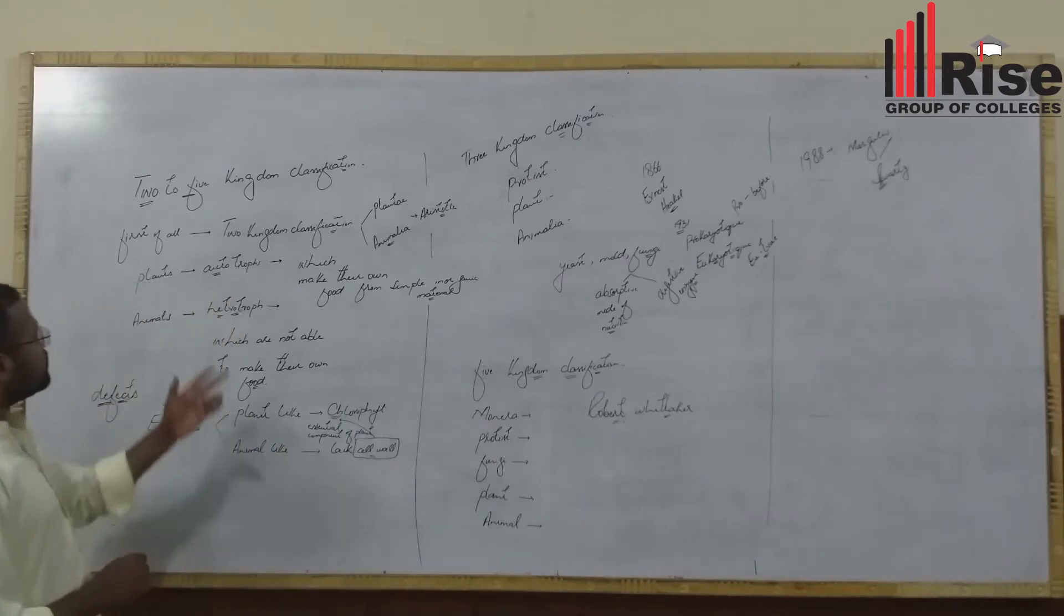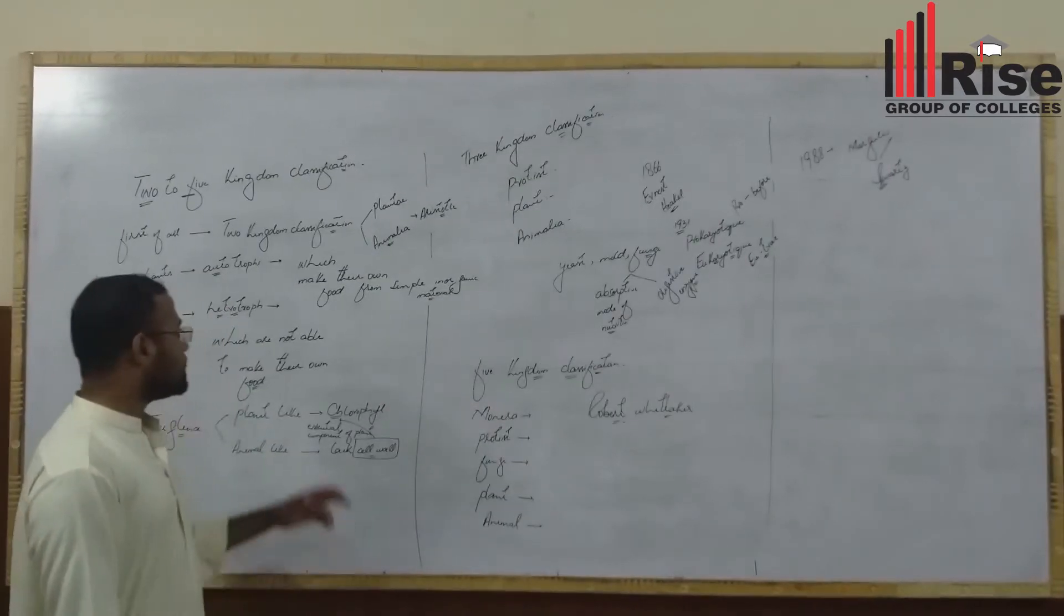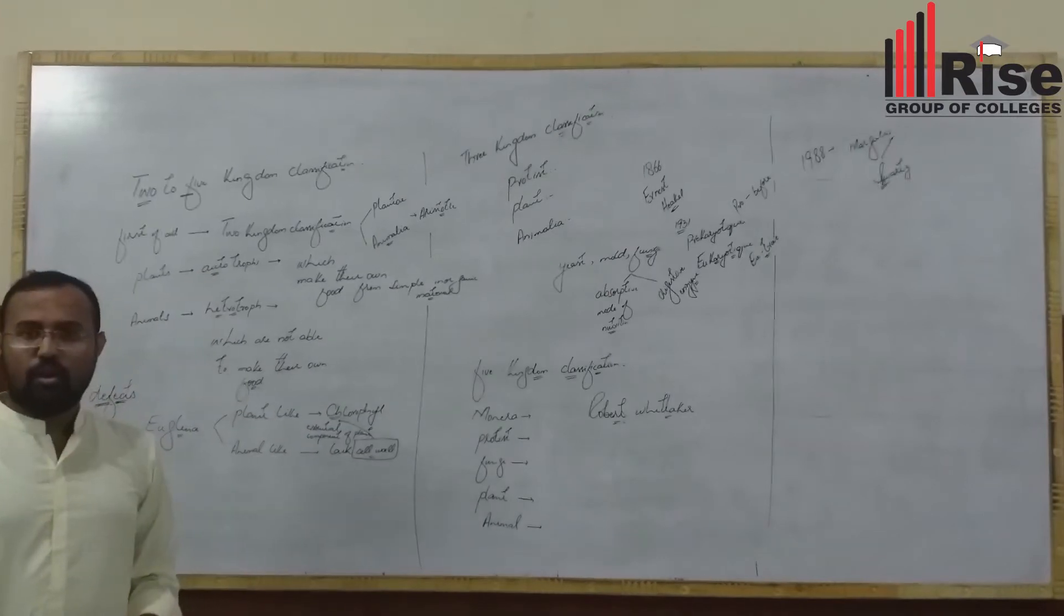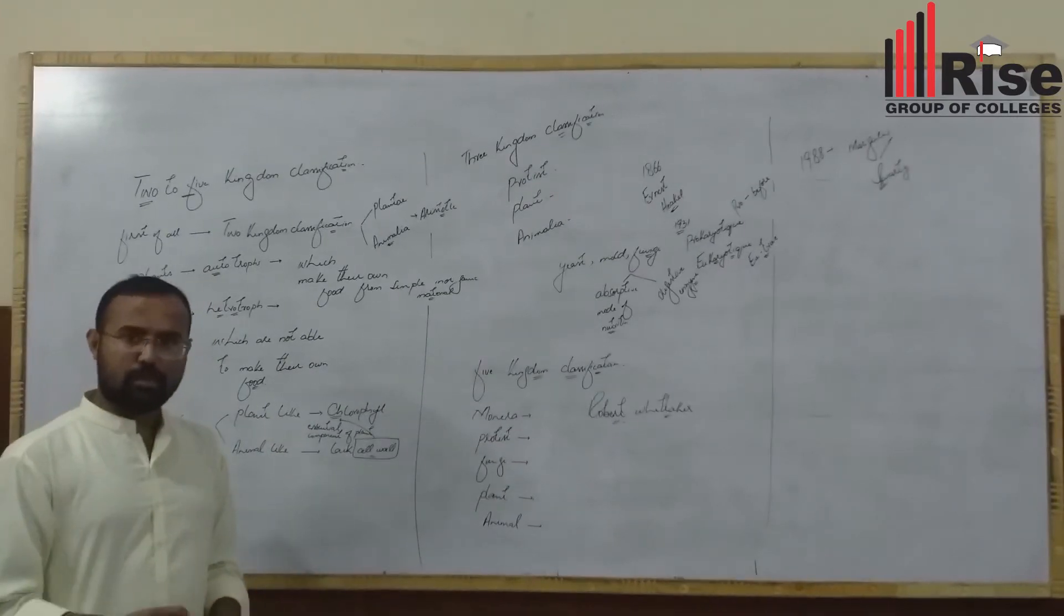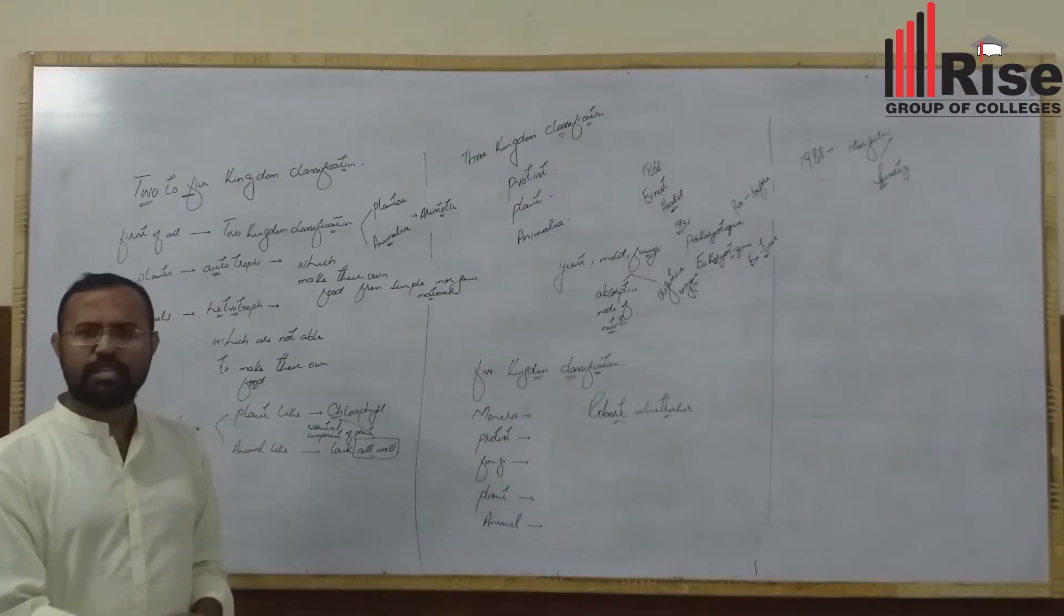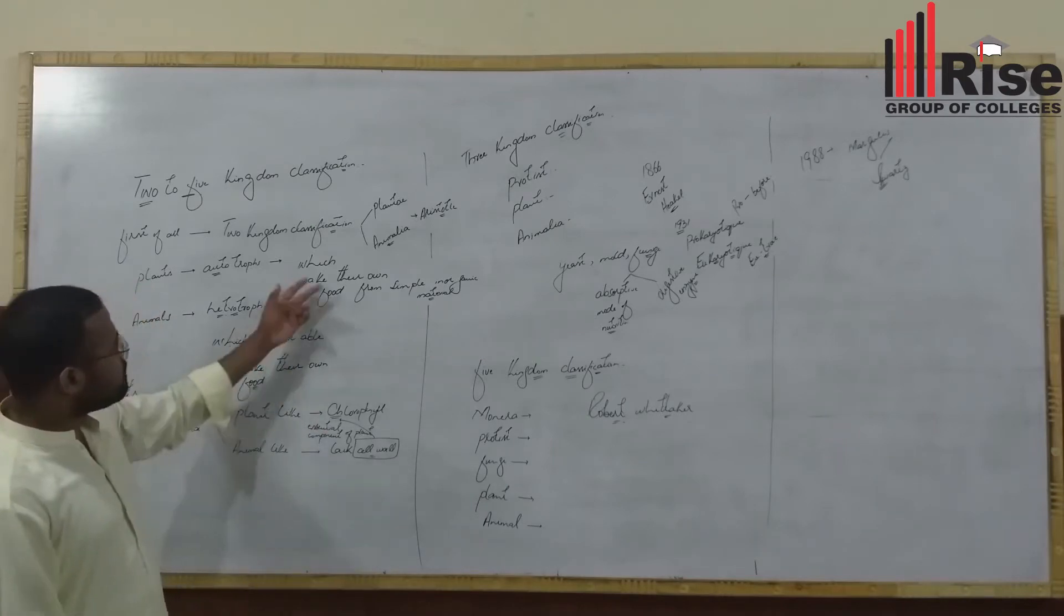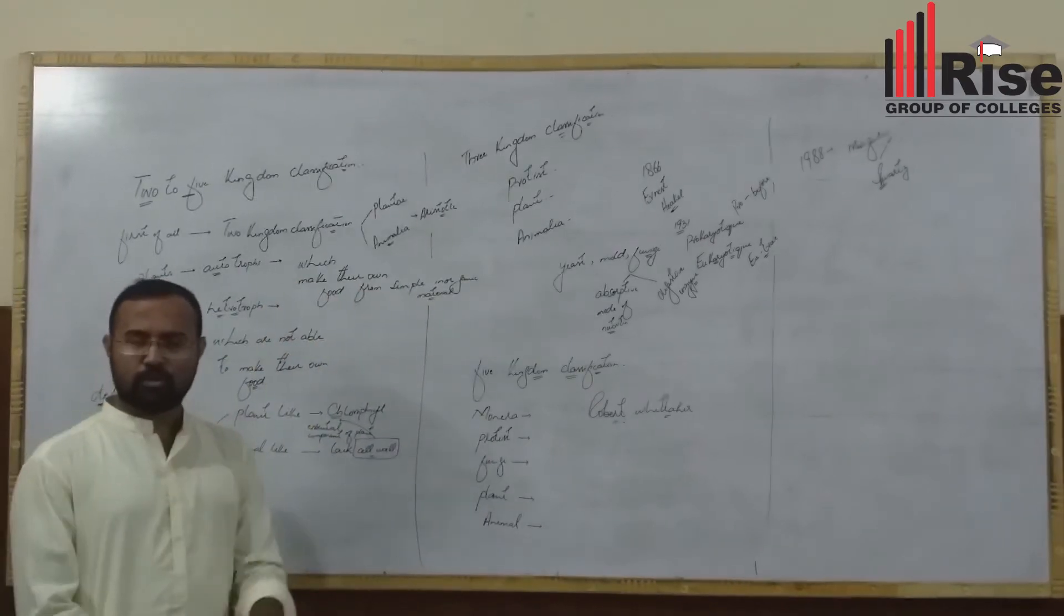The basis is nutrition, the mode of nutrition. Plants are autotrophic. Autotrophic means organisms that make their own food.